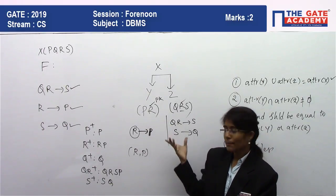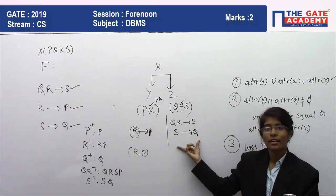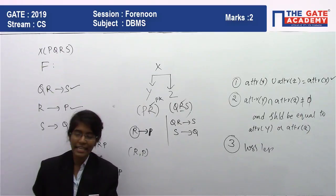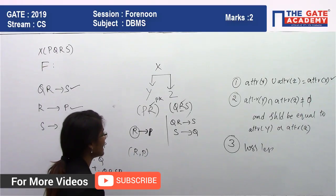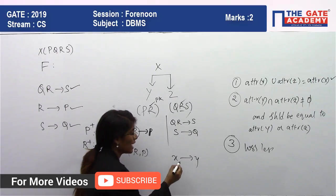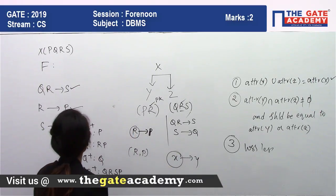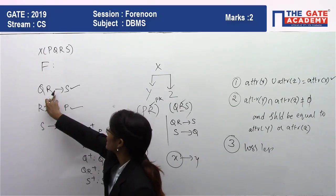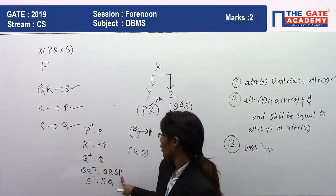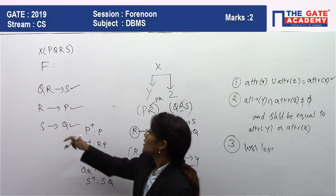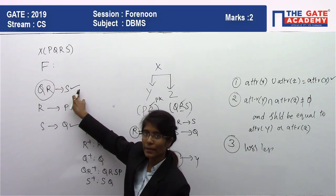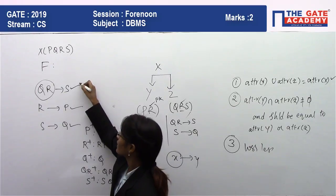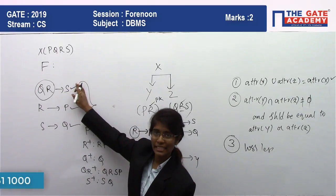Statement 2 is correct — the decomposed tables are both dependency preserving and lossless. Now checking Statement 1: Y and Z are in BCNF. In BCNF, for every X → Y, X must be a super key. X is stated to not be in BCNF because R → P, and R is not a super key of X. QR is the key of X since QR⁺ = {P, Q, R, S}. So QR is a super key, and QR → S is in BCNF, but R → P is not, since R alone is not a super key of X.